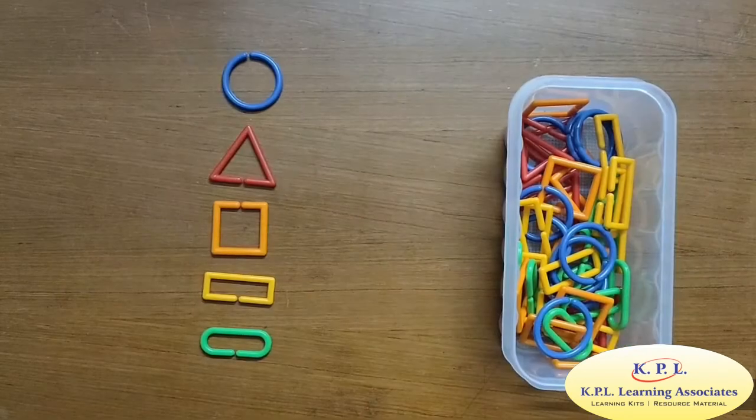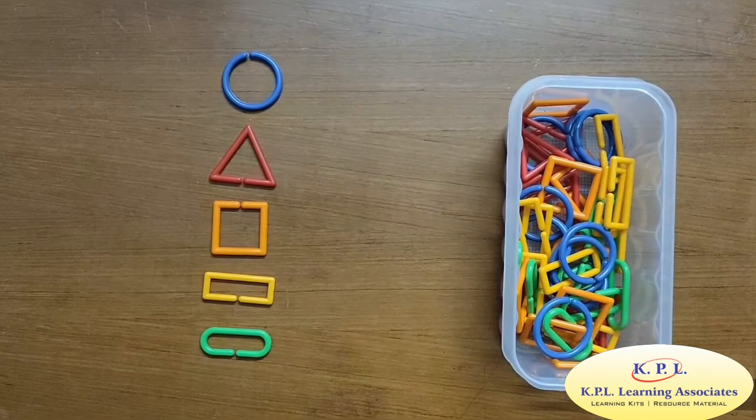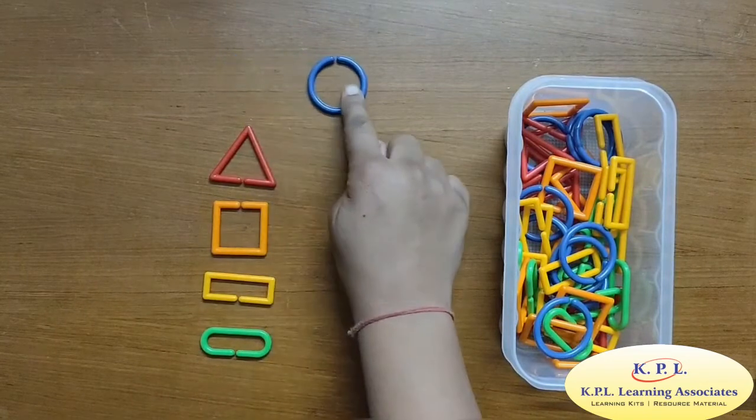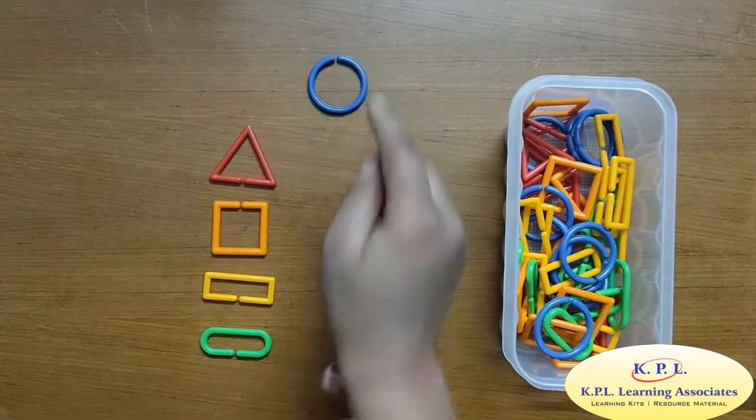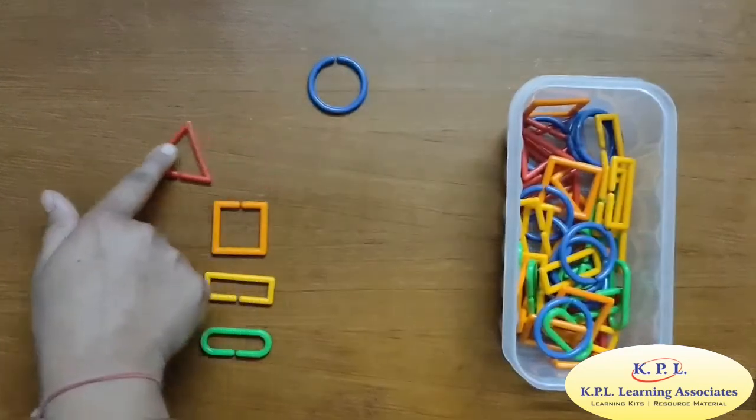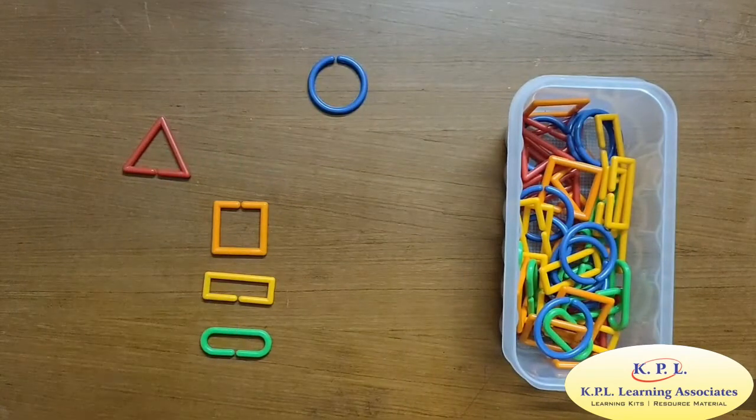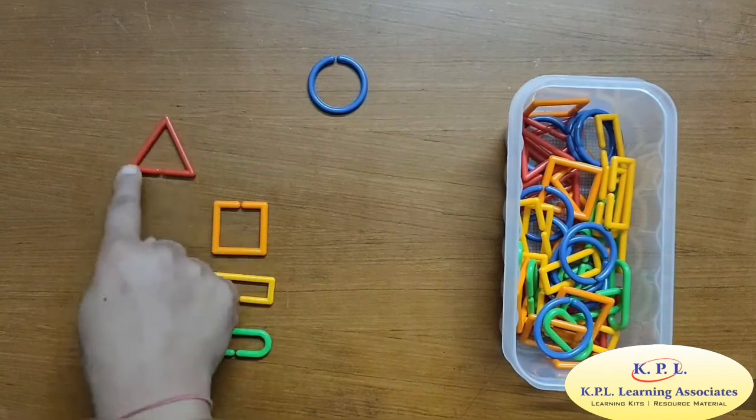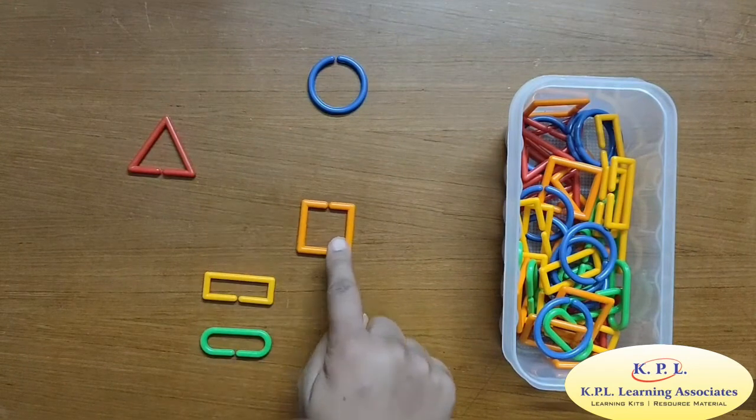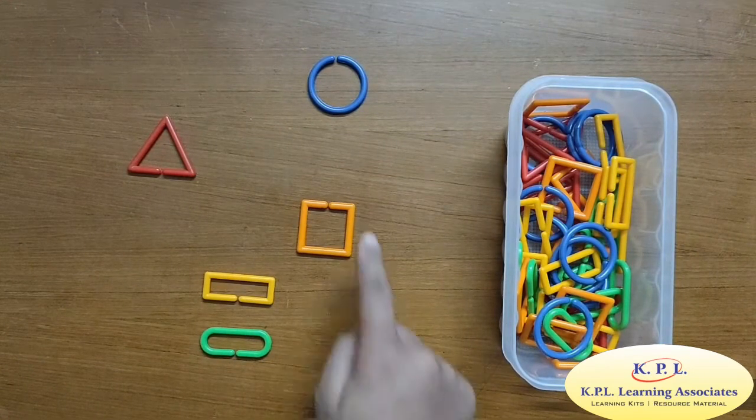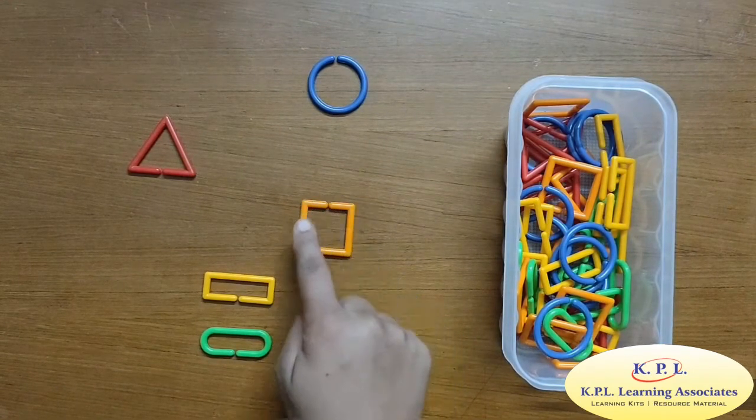Do you know which shapes are these? This is circle, round round circle. Here we have a triangle having three sides and three corners. This is square. It has four equal sides and four corners.